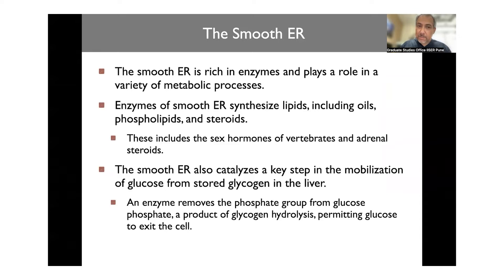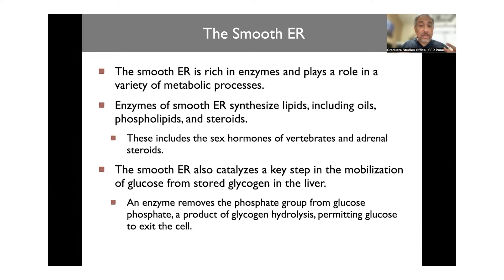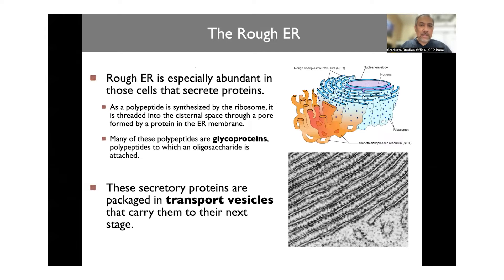The smooth endoplasmic reticulum is rich in enzymes and plays a role in a variety of metabolic processes. Enzymes of the smooth ER synthesize lipids including oils, phospholipids, and steroids — including many hormones. The smooth ER also catalyzes a key step in the mobilization of glucose from stored glycogen in the liver: an enzyme removes the phosphate group from glucose-6-phosphate, a product of glycogen hydrolysis, permitting glucose to exit the cell. Lipid synthesis is particularly important because a lot of the cellular milieu and interactions are happening on lipids.